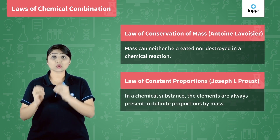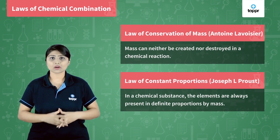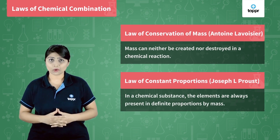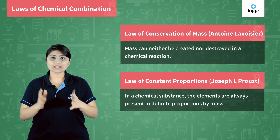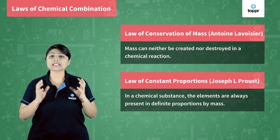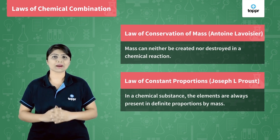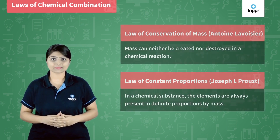The law of constant proportion was given by Joseph L. Proust. According to this law, in a chemical substance, elements are always present in a fixed proportion by mass.